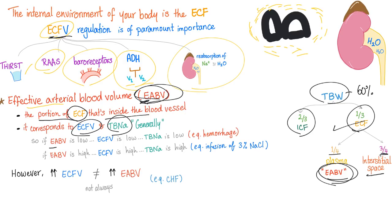So if the effective arterial blood volume is low, you can deduce that extracellular fluid volume is low and the total body sodium is low. Example: hemorrhage. When you have hemorrhage, the extracellular fluid volume is low — of course, you're bleeding. Total body sodium? You're bleeding plasma, which has salt and water, so you're bleeding sodium. Total body sodium is going to be low, and the effective arterial blood volume will be low.